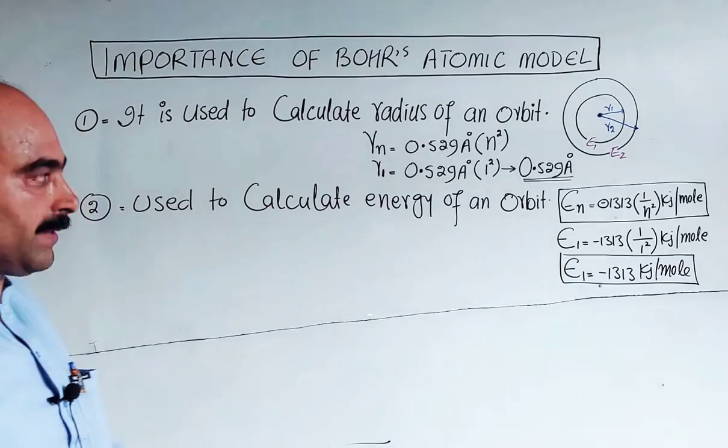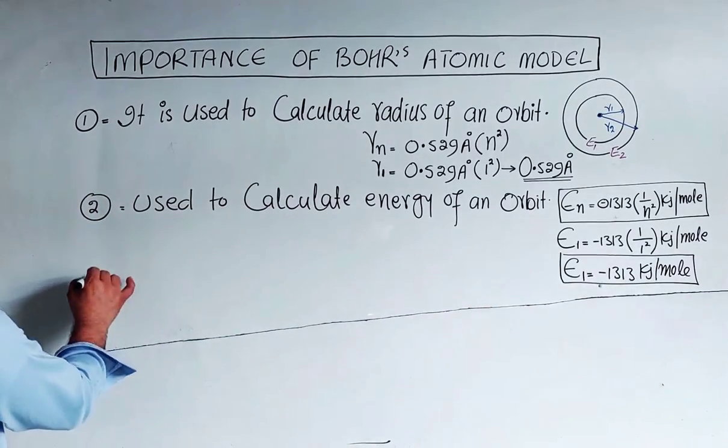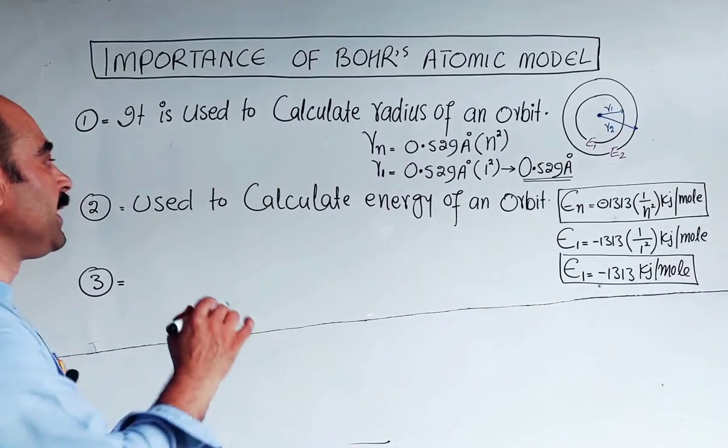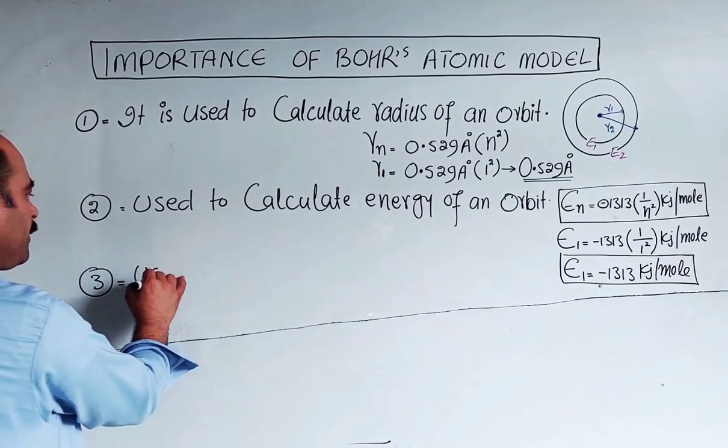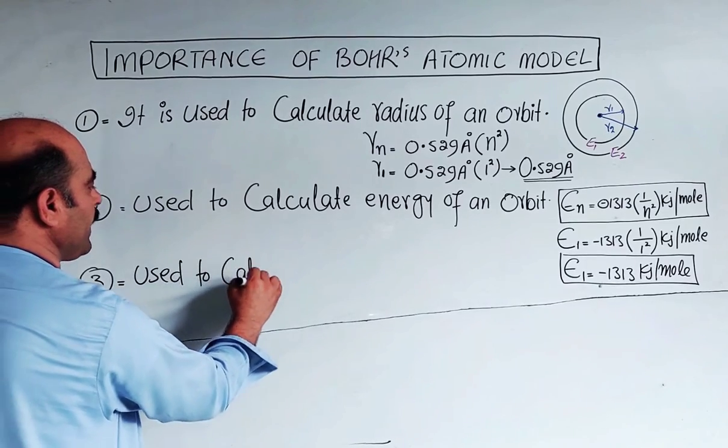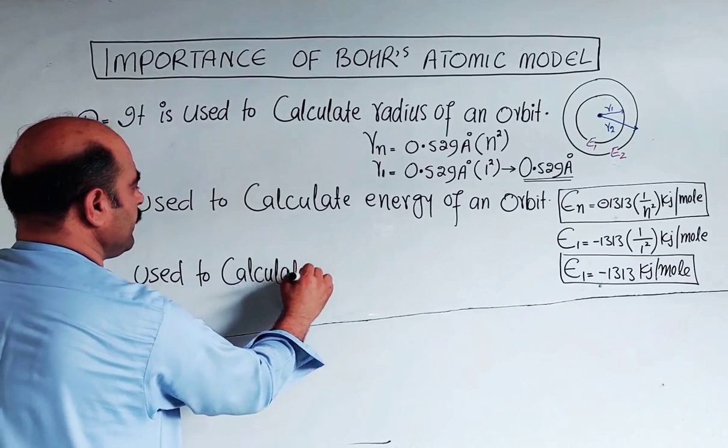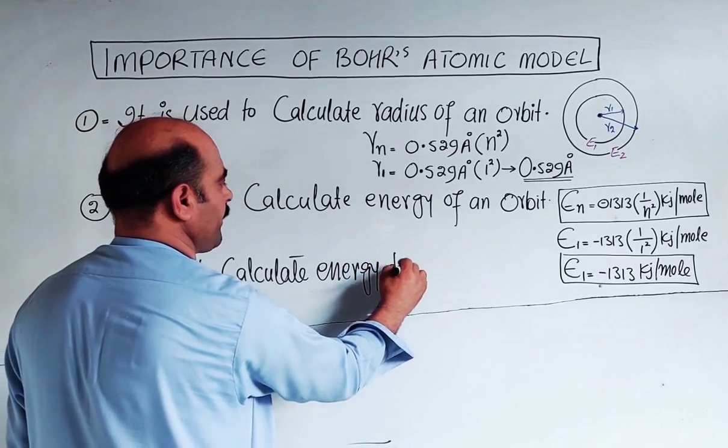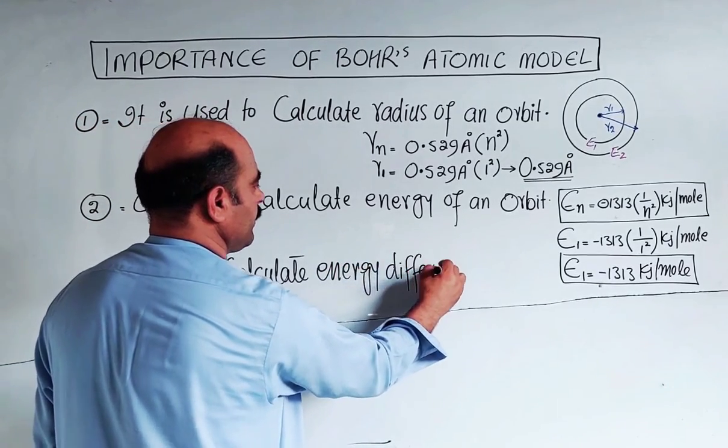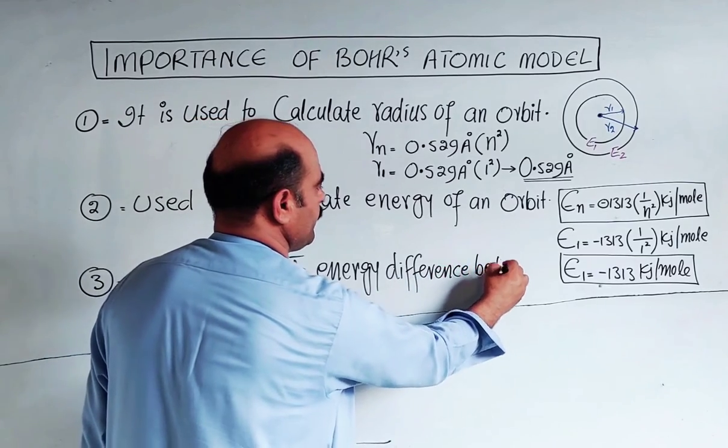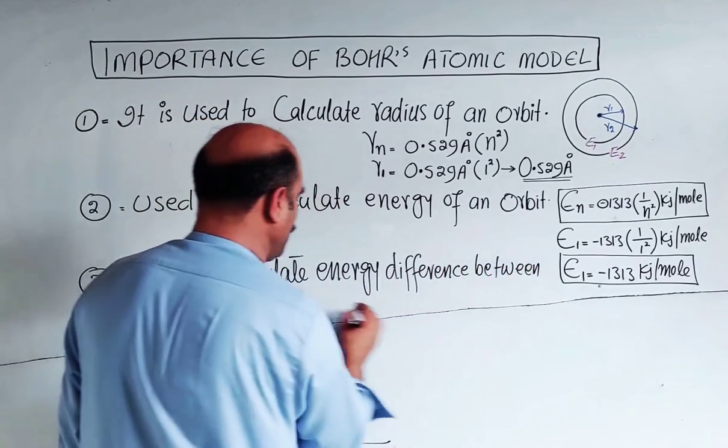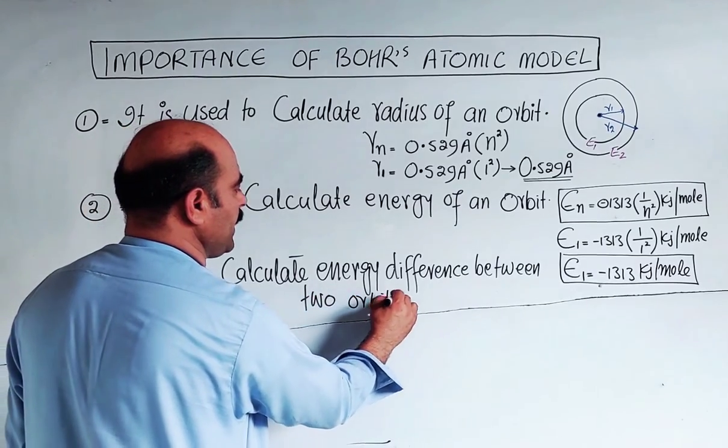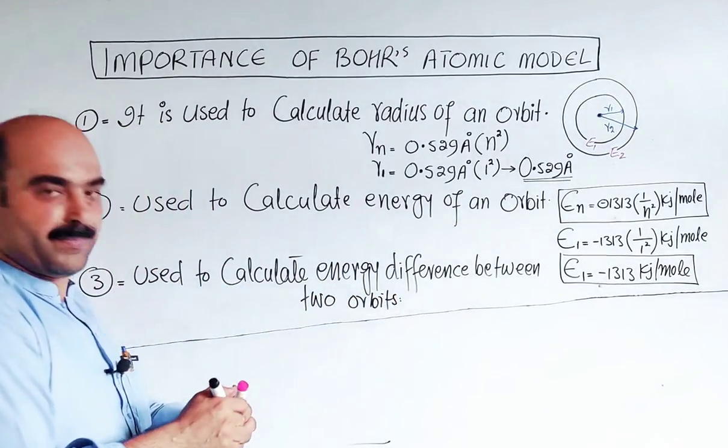Number three: Bohr's atomic model is used to calculate energy difference between two orbits. It is used to calculate energy difference between two orbits.